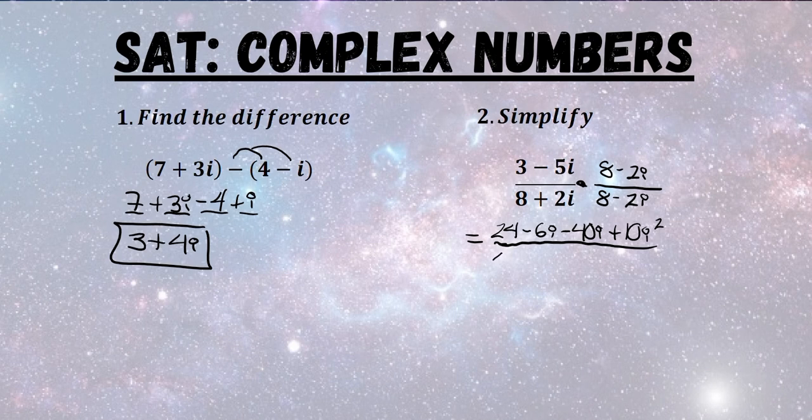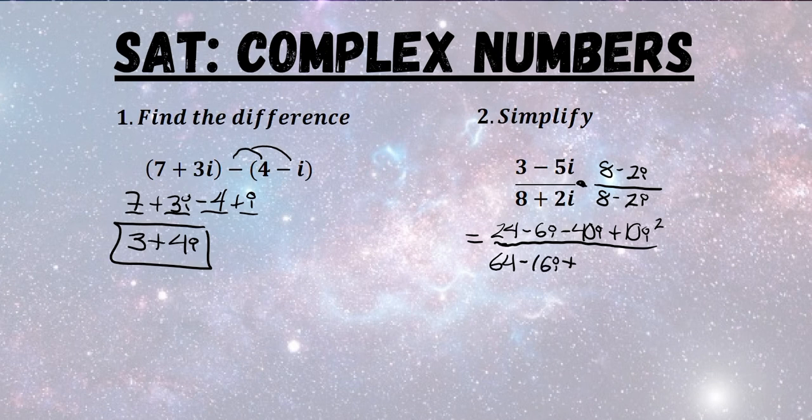8 times 8 is 64. 8 times negative 2i is negative 16i. 2i times 8 is positive 16i. And then 2i times negative 2i is minus 4i squared.